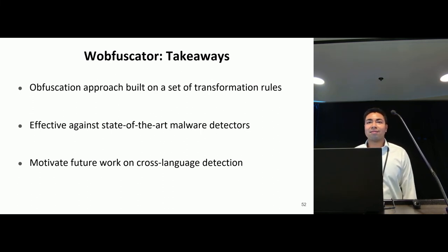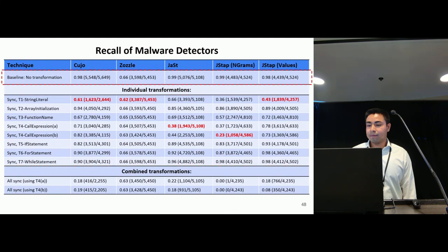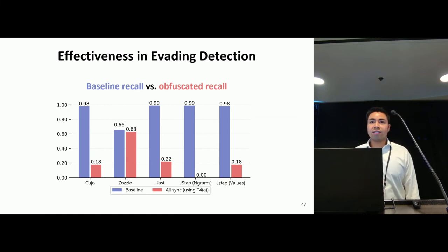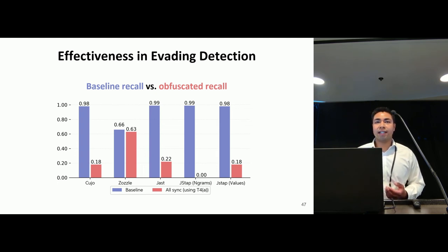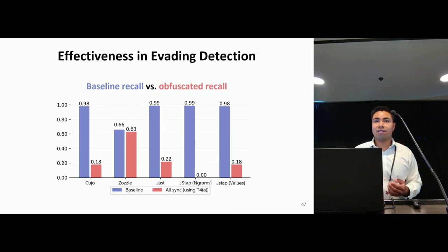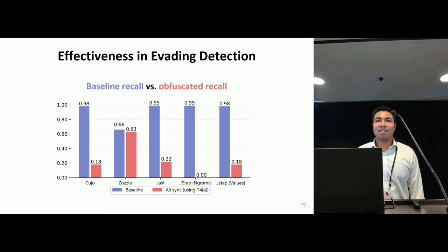This was a great talk. During the evaluation, one of the detectors — Zazzle — was pretty successful. Do you have any conjecture as to why? We think Zazzle performs well against our obfuscation because it looks heavily at identifier names, and our transformations don't really target those. So as much as control flow has moved to WebAssembly, the identifier names still remain in JavaScript. In future work, we plan to look at transformations that would move function names into the WebAssembly module, which we hope would work better against Zazzle.